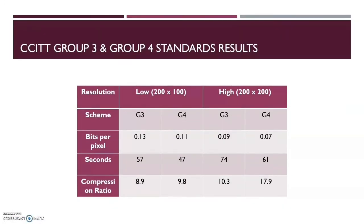This is the performance comparison. For low resolution or high resolution images, we can understand the schemes of Group 3 and Group 4. Group 4 performs better because it uses fewer bits or pixels to represent the information. It has lower processing time while performing its operations and it delivers a relatively higher compression ratio.